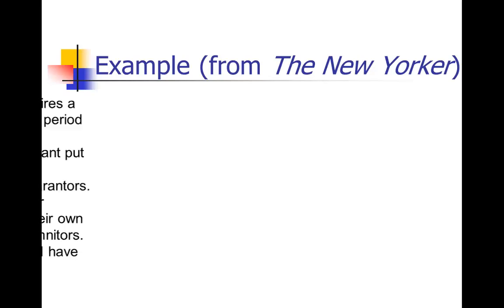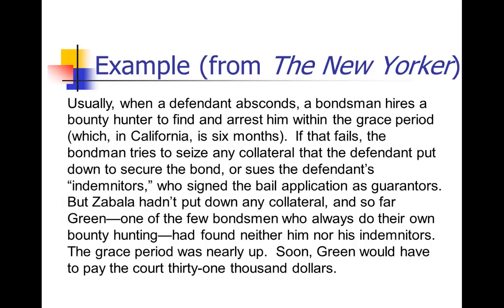So I'm going to start here with an example paragraph from something I was reading in the New Yorker a few years back about bounty hunters and bondsmen and bondswomen. It says: 'Usually when a defendant absconds, a bondsman hires a bounty hunter to find and arrest him within the grace period, which in California is six months.' Notice the use of parentheses. 'If that fails, the bondsman tries to seize any collateral that the defendant put down to secure the bond, or sues the defendant's indemnitors, who signed the bail application as guarantors.'